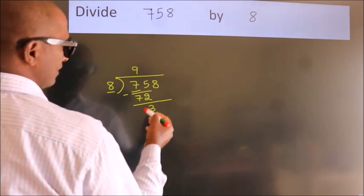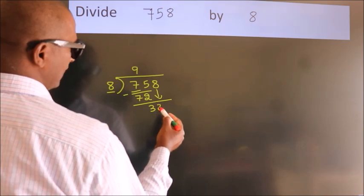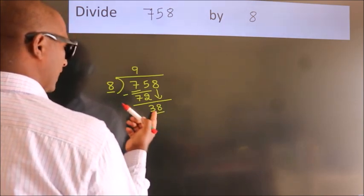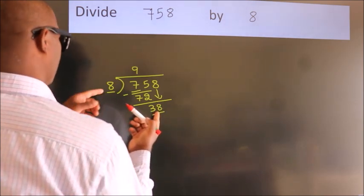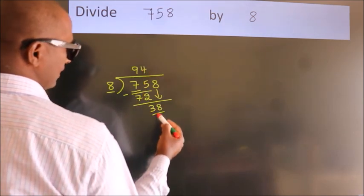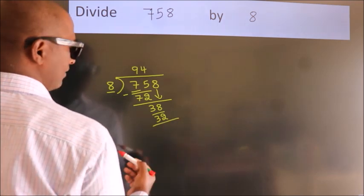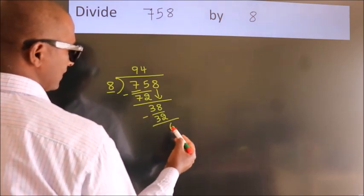After this, bring down the beside number. So, 8 down. 38. A number close to 38 in the 8 table is 8 fours, 32. Now we subtract. We get 6.